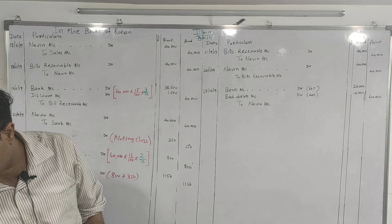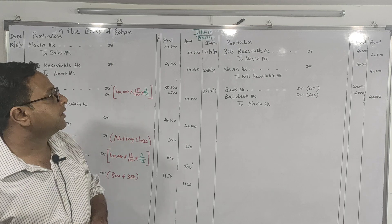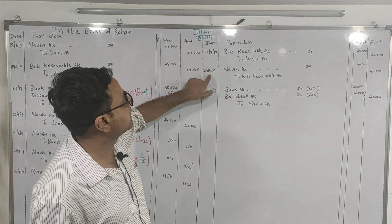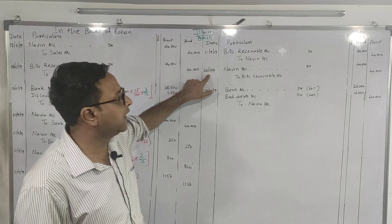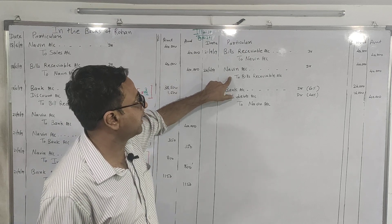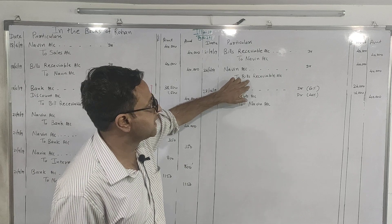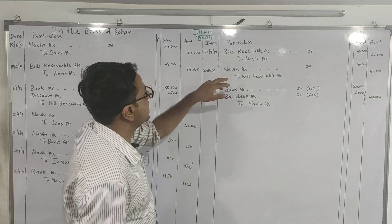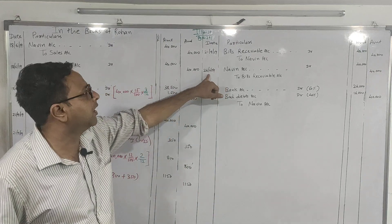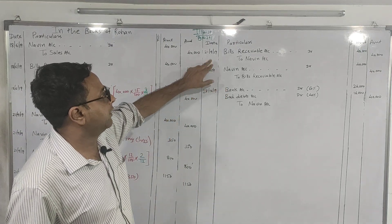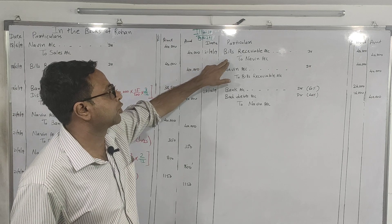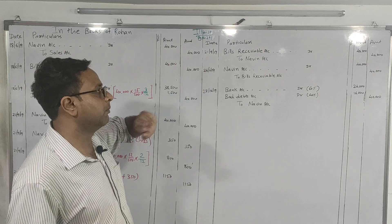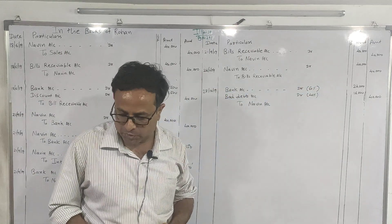Before the due date, Navin declared insolvent. Since we don't know the exact date, we pass the dishonor entry on the date of the bill. The new bill date is 21st September; adding 2 months plus 3 days of grace — September to October, October to November plus 3 days — gives 24th November. Dishonor entry: Navin Dr. to Bills Receivable ₹40,000.